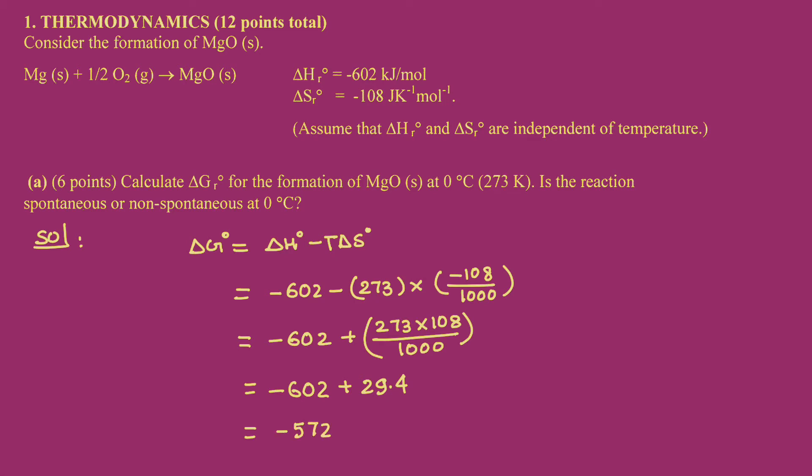We will be getting around minus 572 kilojoule per mole approximately. If you find the exact value, it is 273 into 108 divided by 1000, we are getting it as 29.4, and we have to subtract 602 out of that, we are getting 572.5 approximately.